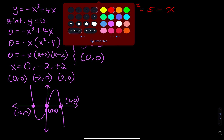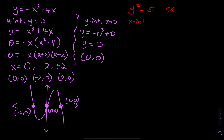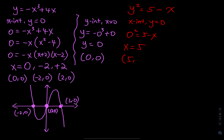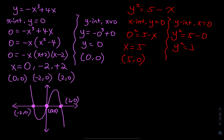For the last equation y² = 5 - x, to find the x-intercept, let y equal to 0: 0² = 5 - x, giving x = 5. The x-intercept is (5, 0). For the y-intercept, let x equal to 0: y² = 5, so y equals plus or minus √5.